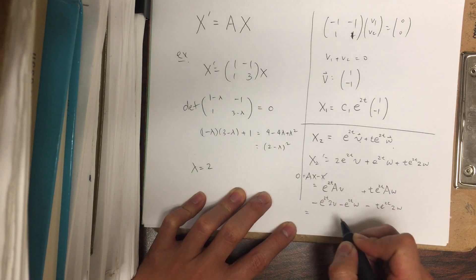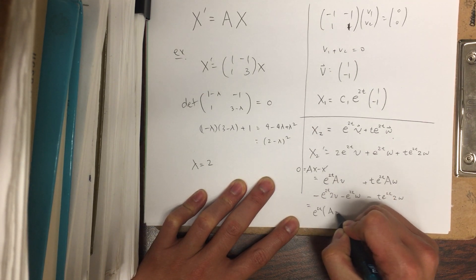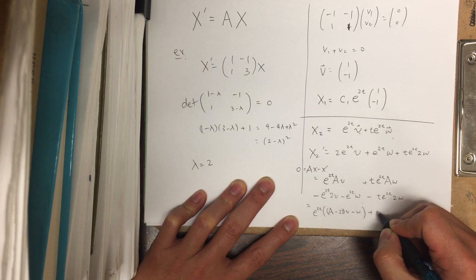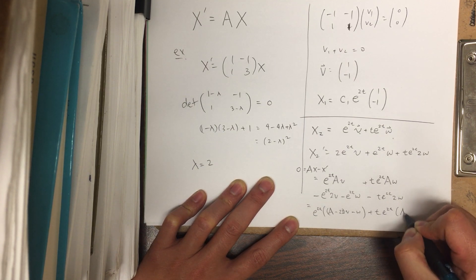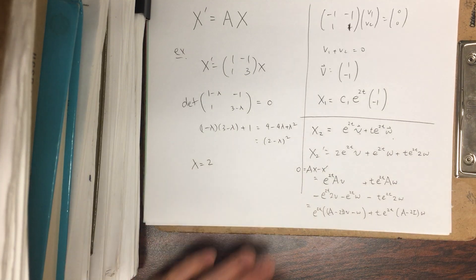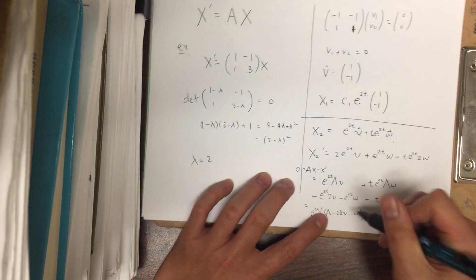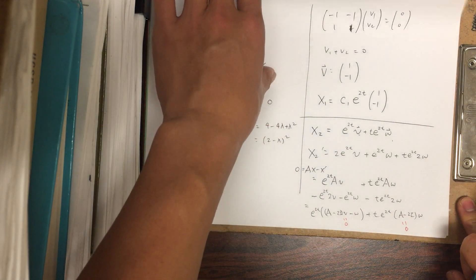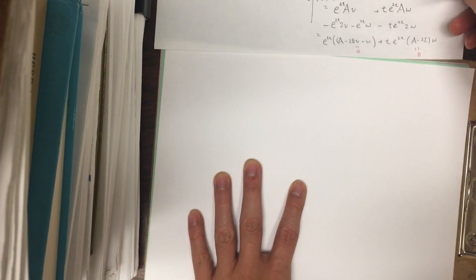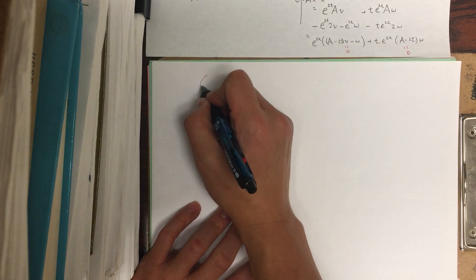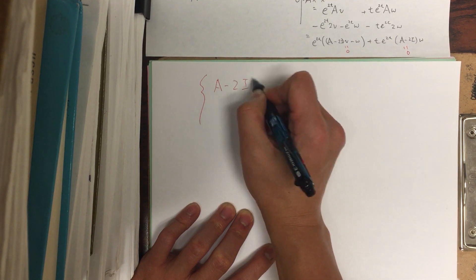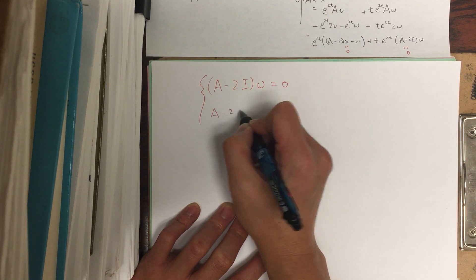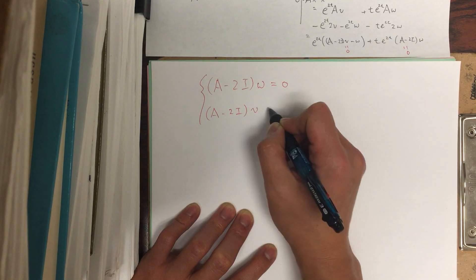Okay, which we factor out the function part. So this is going to be e^(2t) times (A - 2I)v - w, plus t e^(2t) (A - 2I)w. Okay. And so now we want both of these to be zero. So actually we want to solve a system of matrix equations. Namely, (A - 2I)w equals zero and (A - 2I)v equals w.